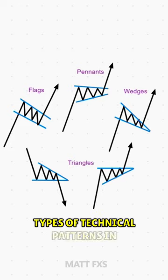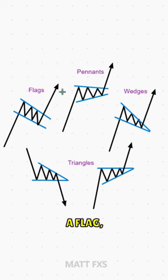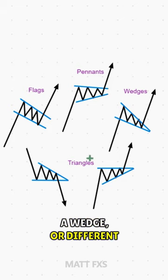So you might have seen these types of technical patterns in the market, whether it's a flag, a pennant, a wedge, or different types of triangles, but what exactly do they represent?